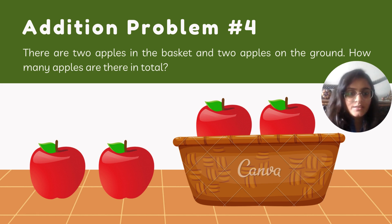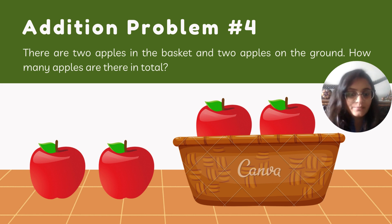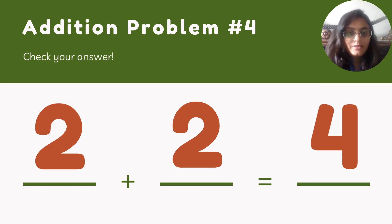Addition problem four: there are two apples in the basket and two apples on the ground. How many apples are there in total? If you count the total number of apples: one, two, three, four. So there are four apples. That means two plus two equals four apples.